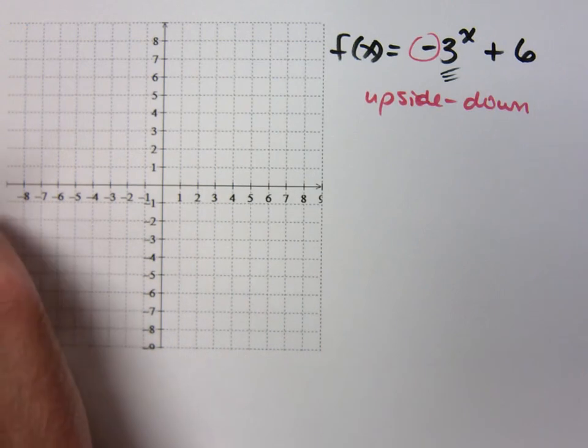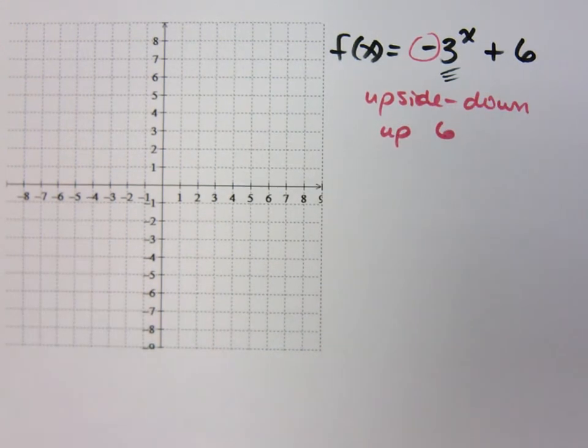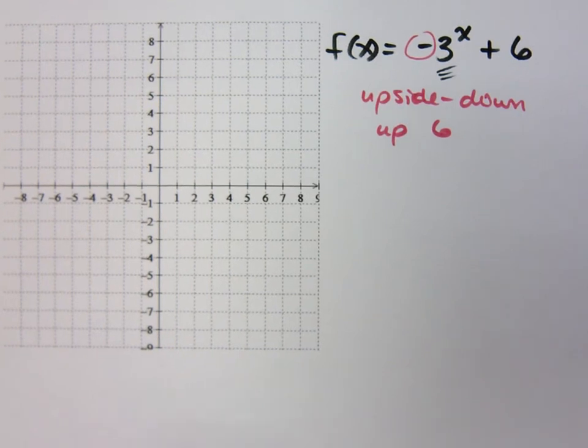What about that plus 6? What does that mean? I'm going to go up 6. So that means that my horizontal asymptote is what? Y equals 6.